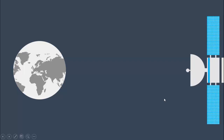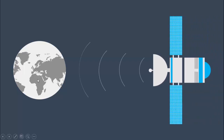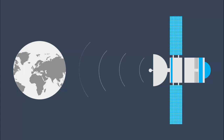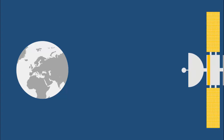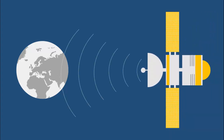In today's tutorial I'm going to show you how to create a satellite animation slide in PowerPoint. As you can see, I've used one dark color background and added the globe or atlas. When I click, the satellite comes and keeps transmitting signals to the earth. You can add some text or image of your choice. I've created one more slide with a different color combination as well.